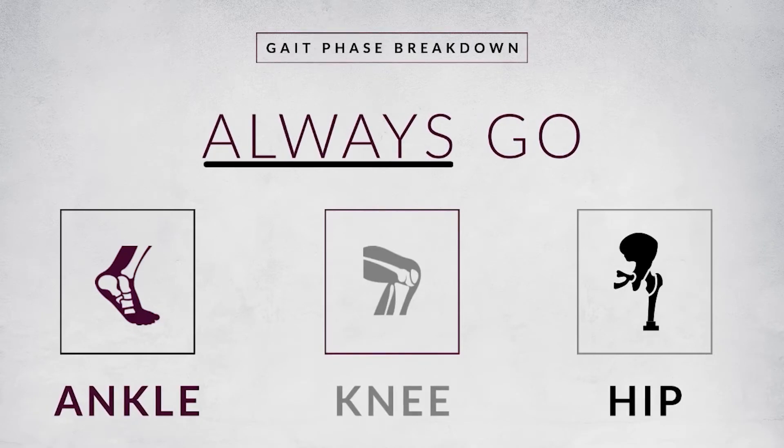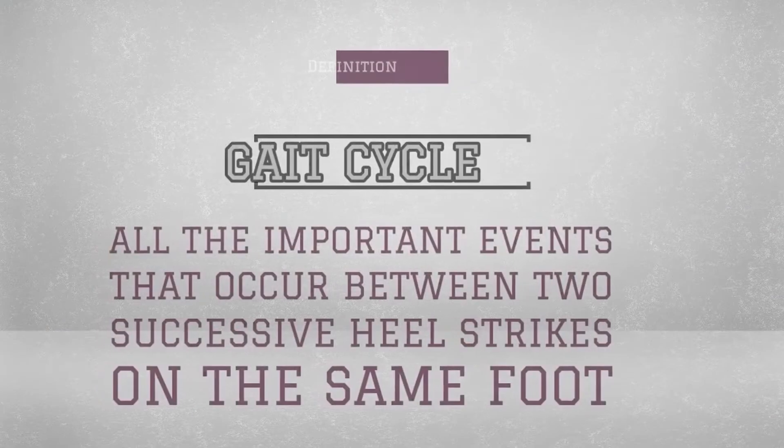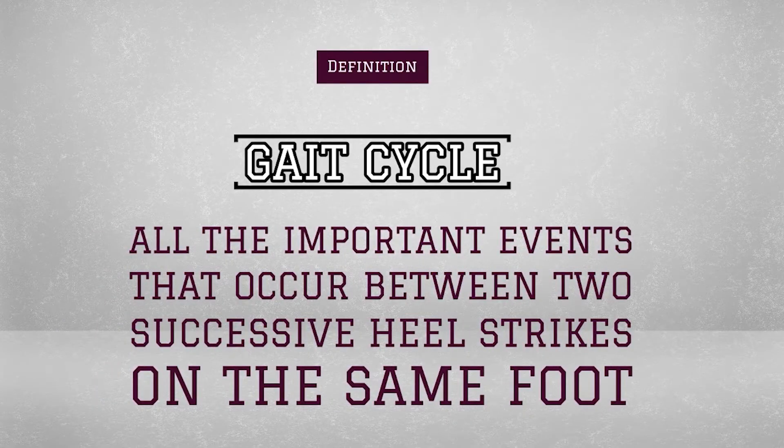For every phase of the gait cycle, you should consider three joints: ankle, knee, and hip. That doesn't mean there's a muscle contraction occurring at every joint, but it's a great way to make sure you don't forget one. One of the biggest things most students forget is they think about the ankle and foot, do everything right for the ankle, but forget either the knee or the hip. So always say: ankle, knee, and hip. The first phase of the gait cycle is heel strike — in fact, the gait cycle is defined as all the important events that occur between two successive heel strikes on the same foot.